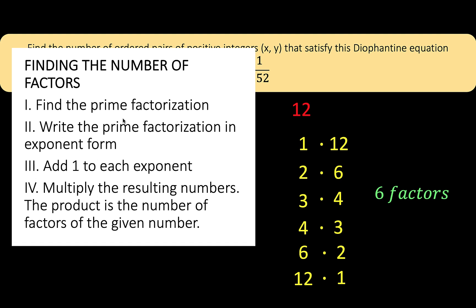First step is find the prime factorization of the given number. The prime factorization of 12 is 2 squared times 3. We want to write that prime factorization in exponent form. Then in step number 3, you take all these exponents 2 and 1, and add 1 to each of these exponents. So this exponent 2 plus 1, that's 3. This exponent 1 plus 1 is the other factor 2. Then step number 4, multiply the resulting numbers. So you have 3 times 2, which equals 6, which is the same as these six factors.